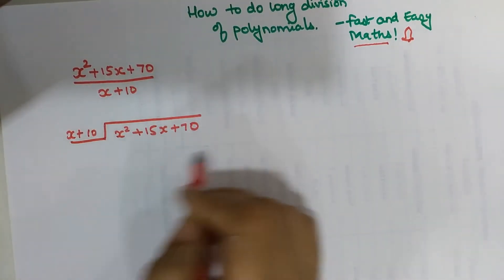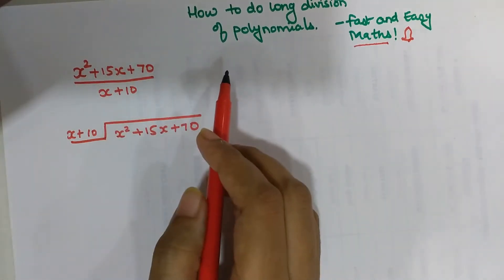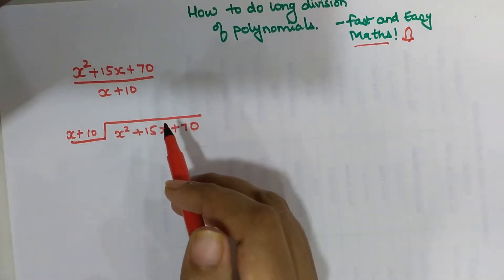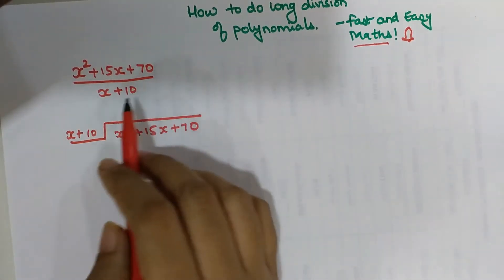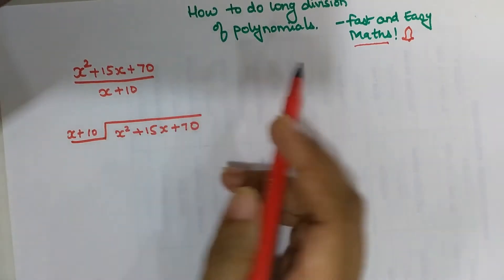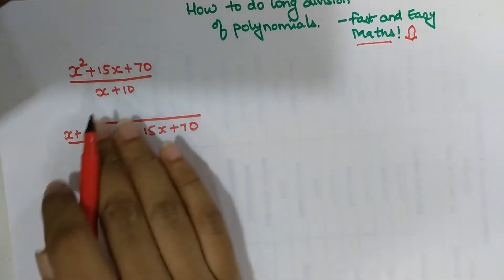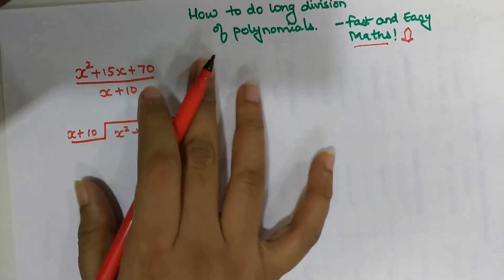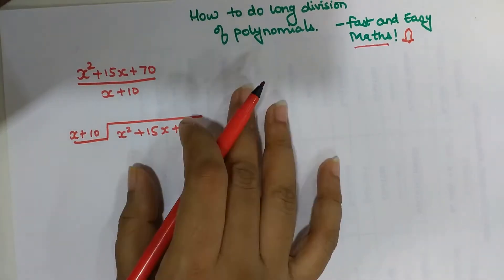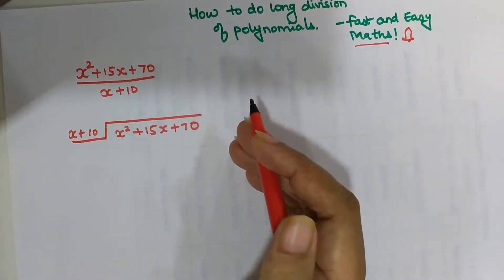Before beginning this division, I want to point out that since my numerator and denominator had nothing in common, I directly started the division. But there might be scenarios where you can factorize the numerator so that some things get cancelled from the numerator and denominator. If that is the case, please check that first, because once you cancel things the division becomes much easier as the entire fraction reduces.